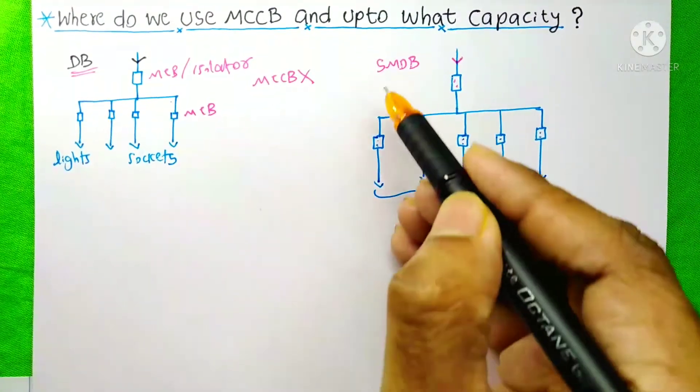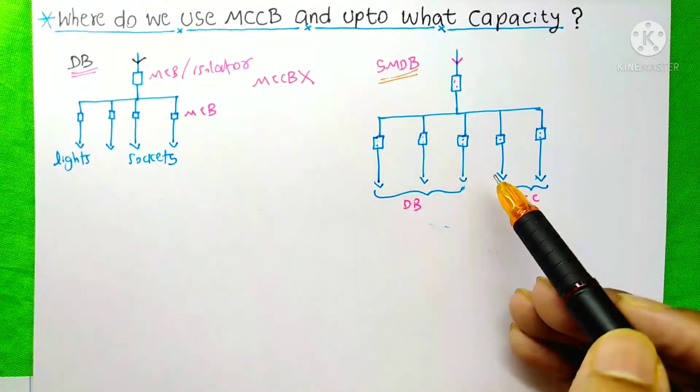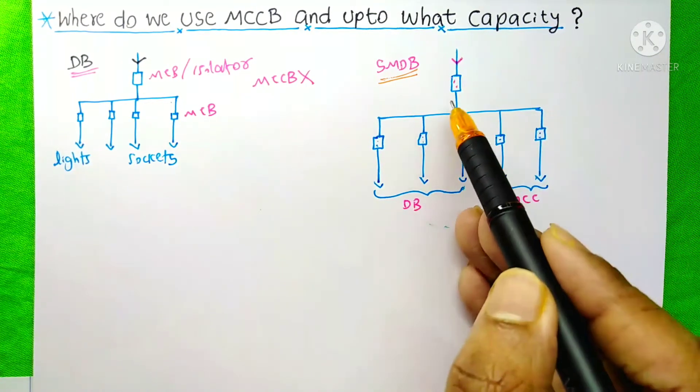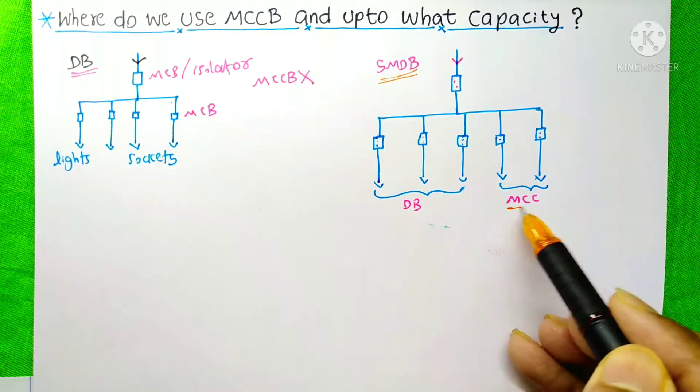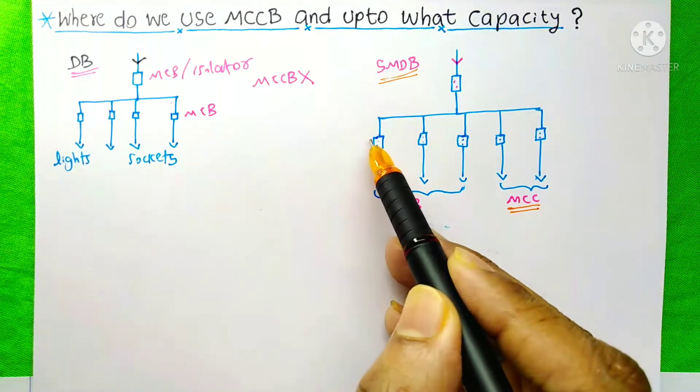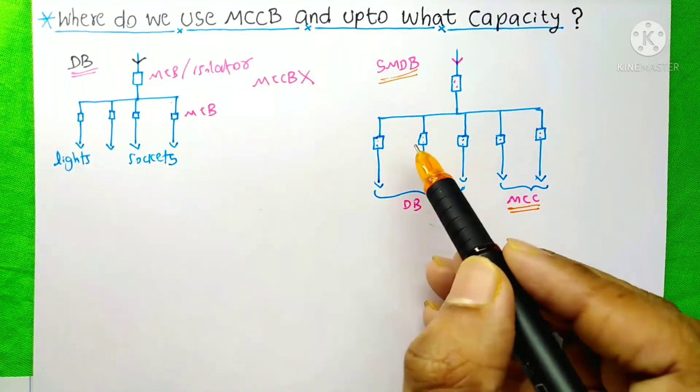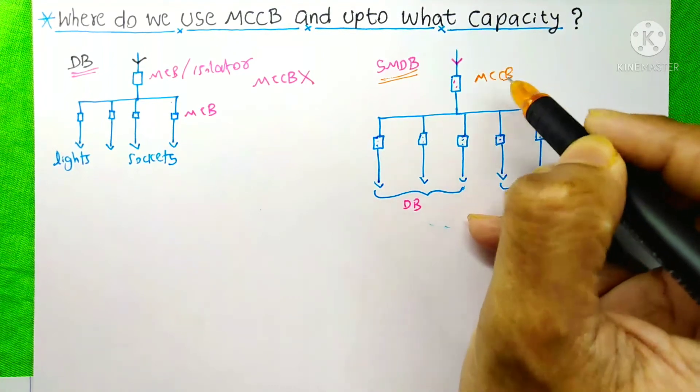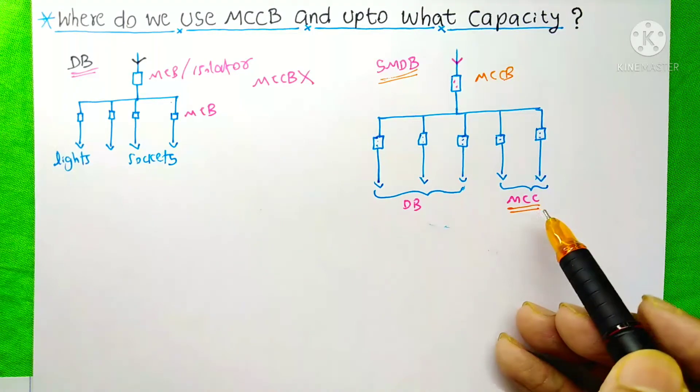The next case is about the SNDB. It is an SNDB and it is the main breaker of this SNDB. And this SNDB is feeding different DBs and also the MCCs that is Motor Control Centers. And these are the branch breakers for these DBs and MCCs. Generally for this SNDB, we use MCCB for the incoming breaker. And for the DBs and MCCs also, we use MCCB.